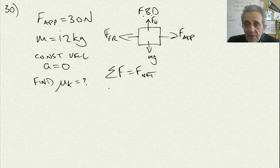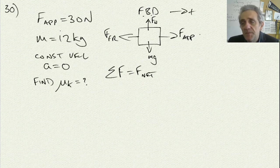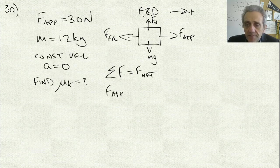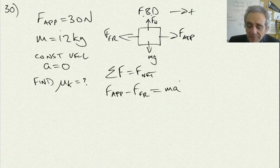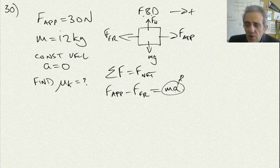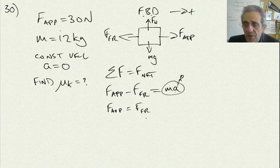The positive direction is in the direction of the applied force. So I have applied force minus friction, and that's equal to ma. I also know that the acceleration is zero, so ma is zero. Therefore, applied force is going to be equal to the friction force.